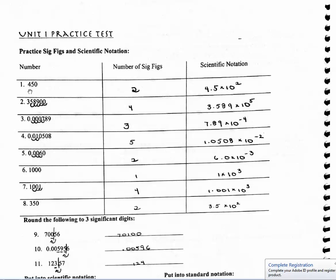For the first problem, you have 450. If you're counting significant figures, notice there is no decimal place, so we are going to be counting from right to left. You can't start counting on a zero, so this zero is not significant, therefore you only have two significant figures.